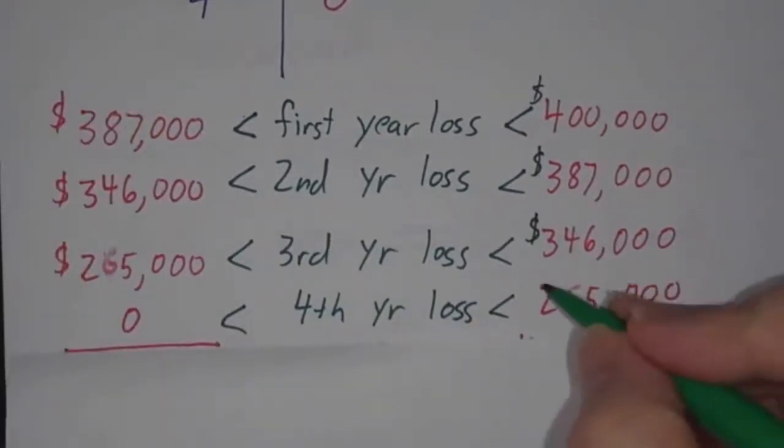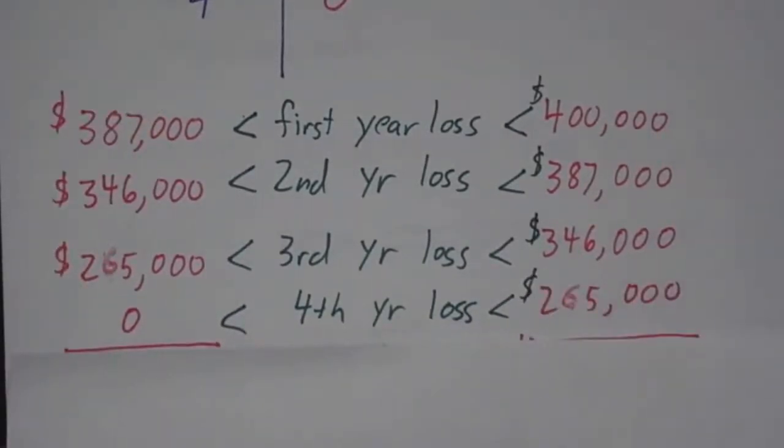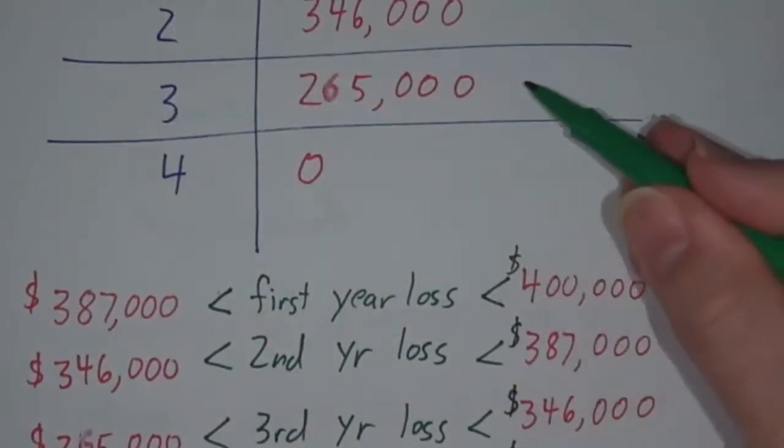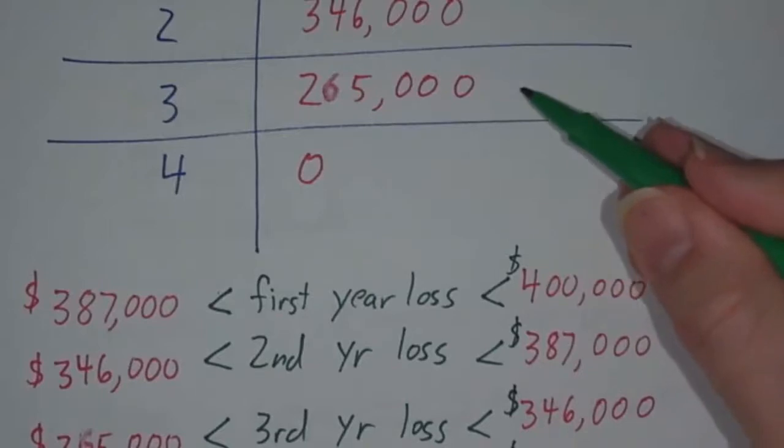In the fourth year, the amount of money it lost was somewhere between zero, because by the end of the fourth year it was breaking even, and $265,000, the amount of money it was losing at the beginning of the fourth year.